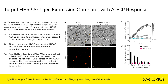Additionally, we studied ADCP using adherent target cells with varying HER2 antigen expression profiles. ADCP was examined using HER2-positive AU565 or HER2-low MDA adherent target cells. Cells were labelled with Frodo, then treated with an anti-HER2 monoclonal antibody and co-cultured with bone marrow-derived macrophages. Anti-HER2 induced an increase in fluorescence for AU565 cells, but little to no fluorescence was observed for MDA-MB231 cells. The time course shows an ADCP response for AU565 cells in a time- and concentration-dependent manner, consistent with established correlations between HER2 expression and ADCP response.